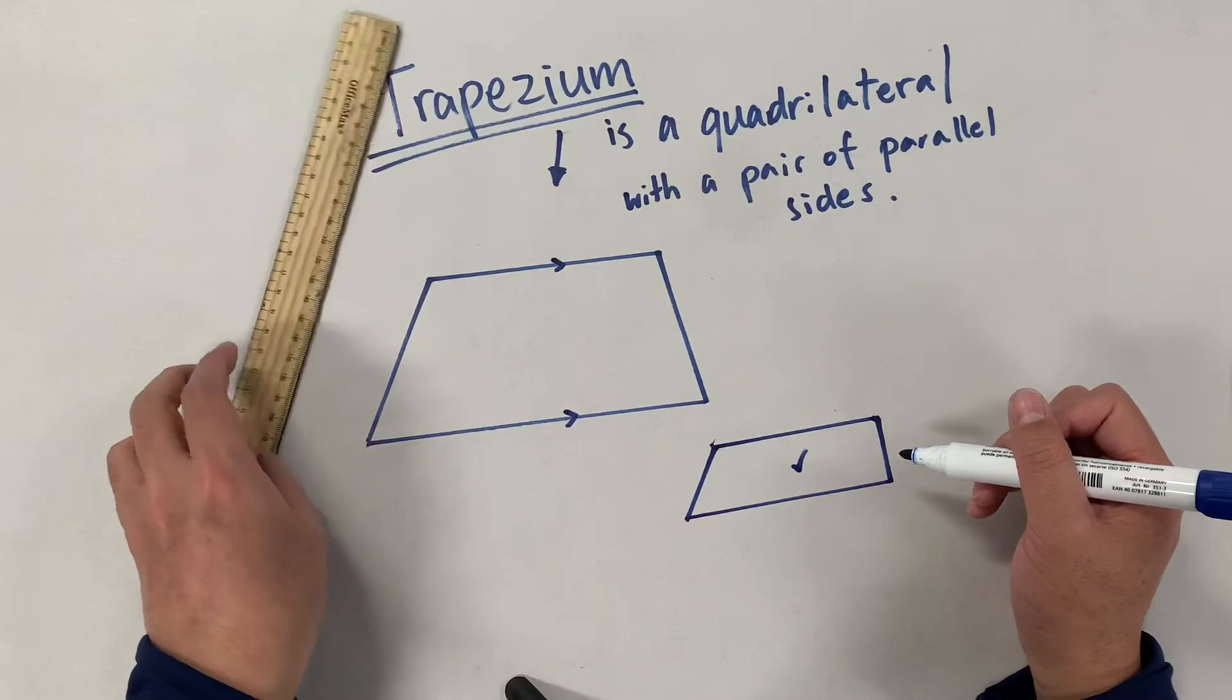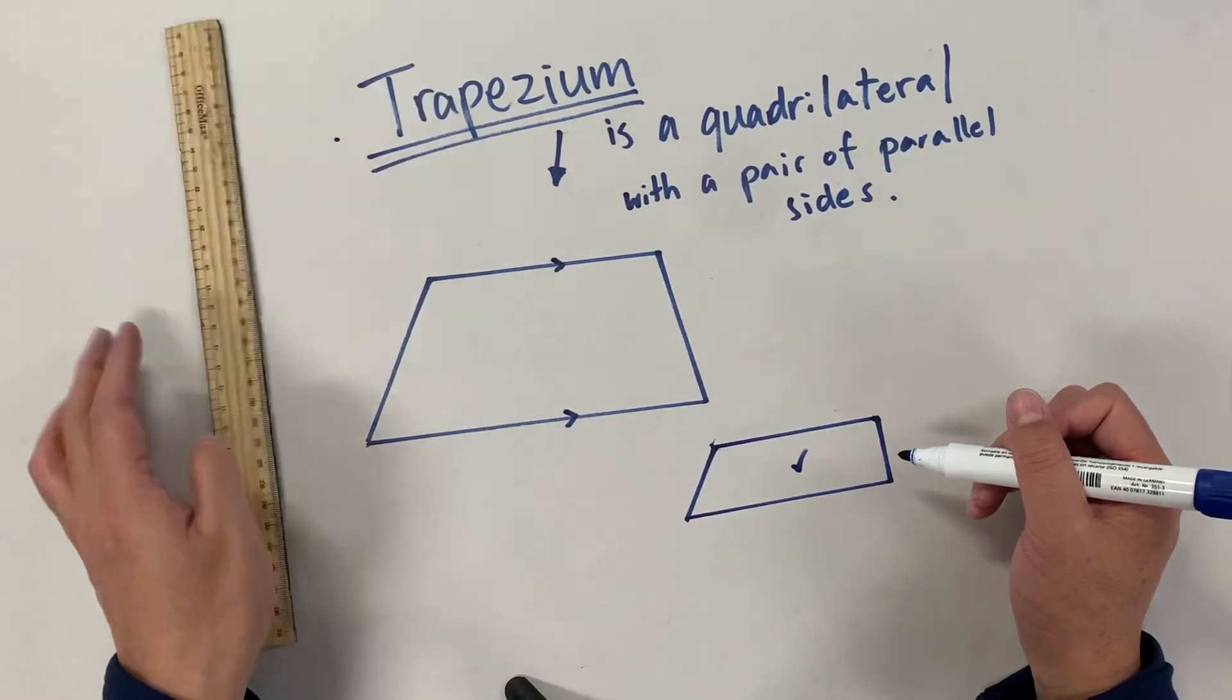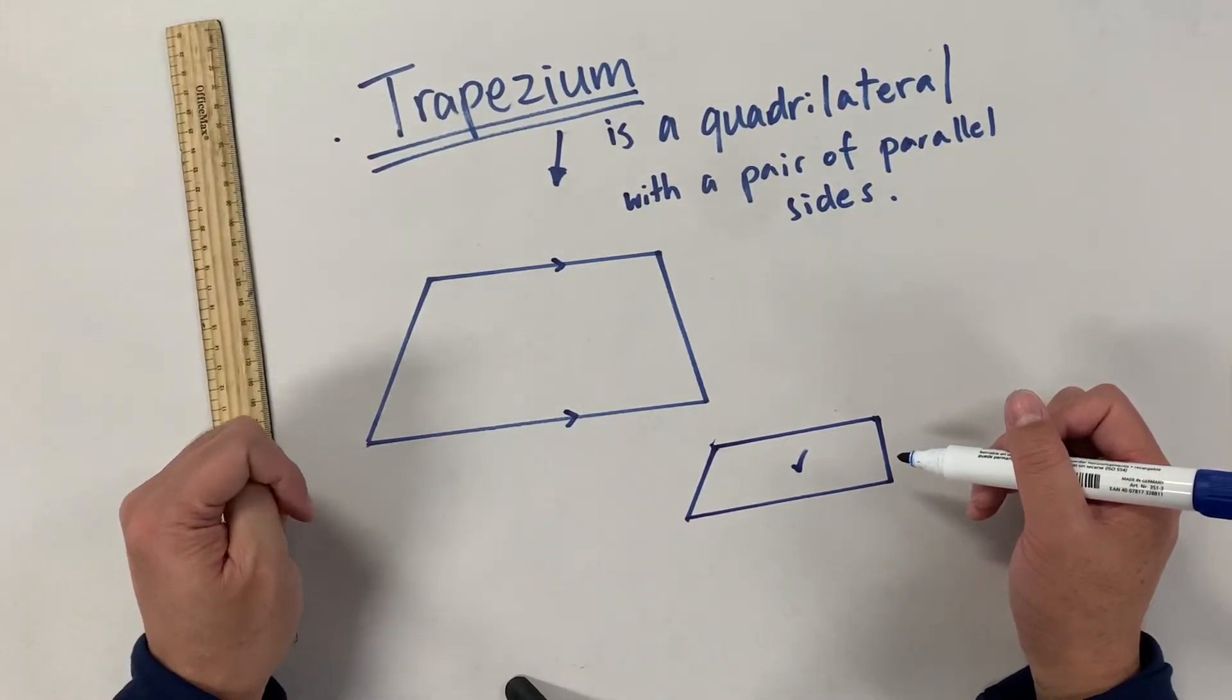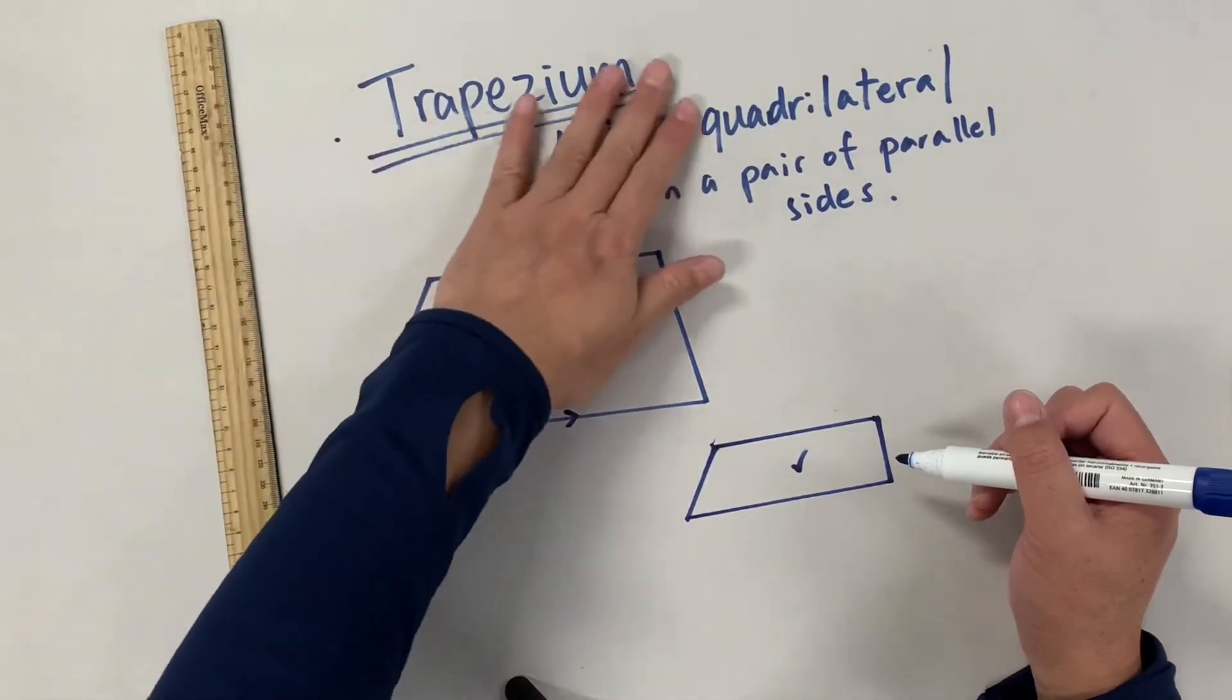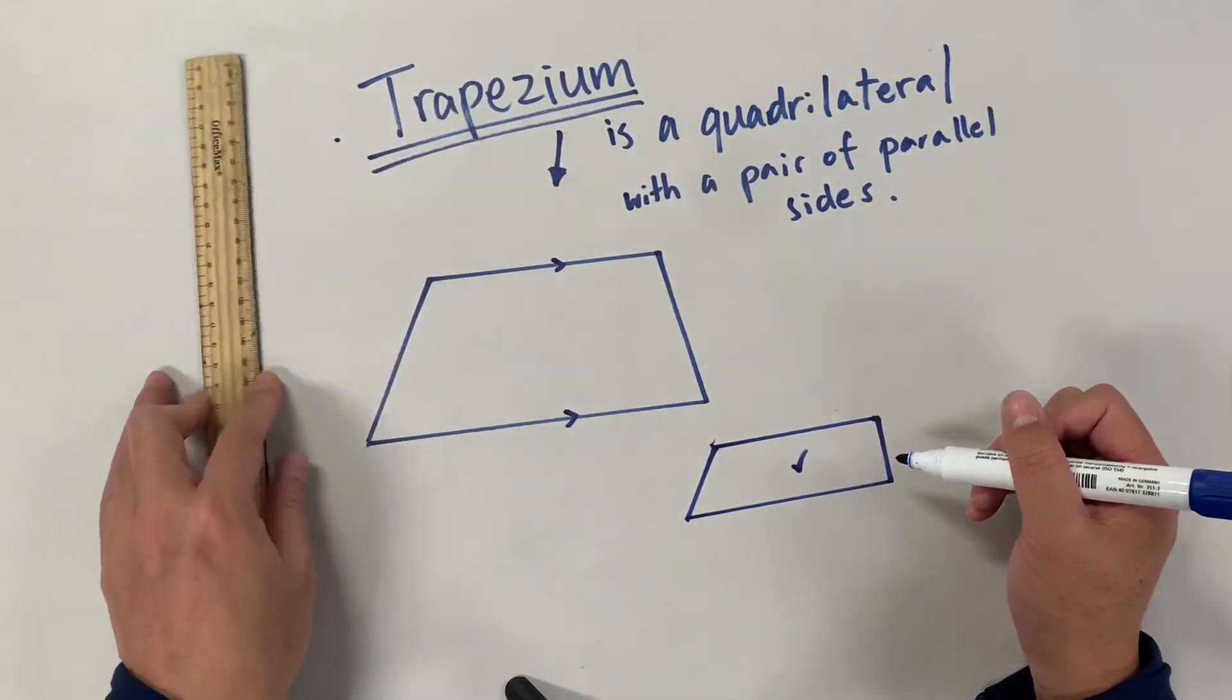So with the ruler, let's try to draw different types of trapeziums.